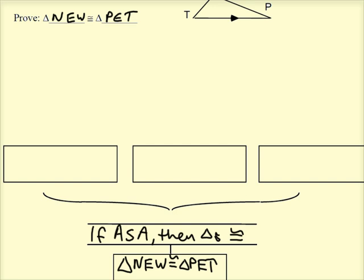And so we need to talk about which pair of angles, which pair of sides, and which pair of angles are congruent in order to prove that the triangles are congruent.